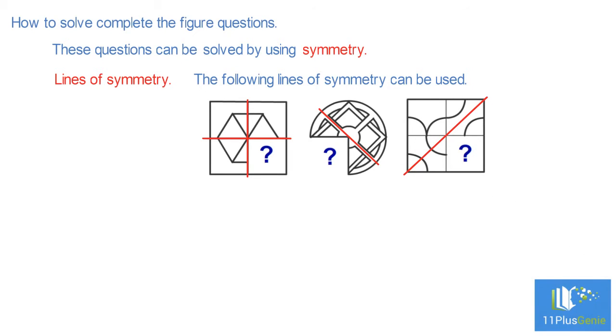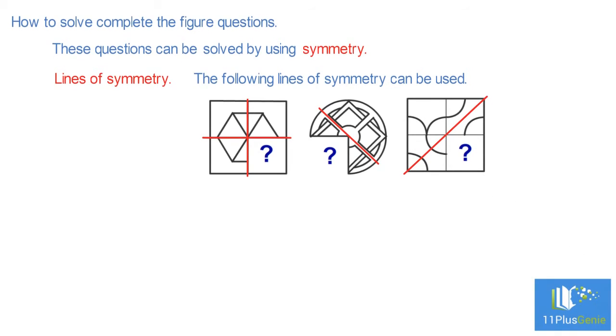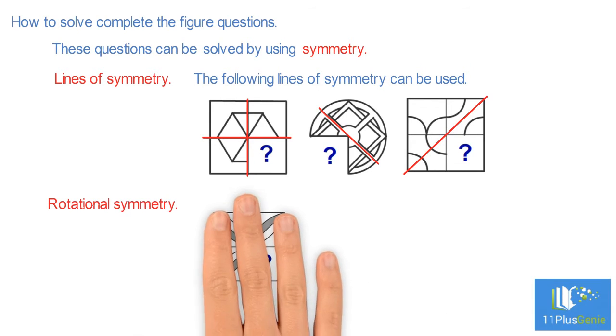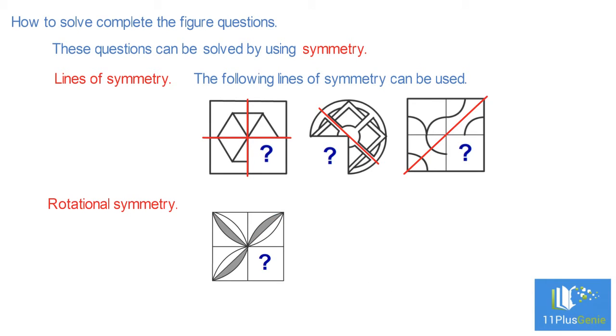Rotational symmetry: If there is no line of symmetry, try rotational symmetry. In this diagram, there is no line of symmetry, but if we turn the diagram through 90 degrees clockwise, the shape fits onto itself.